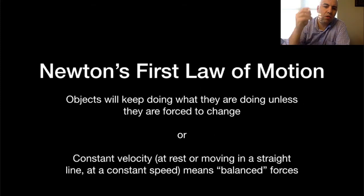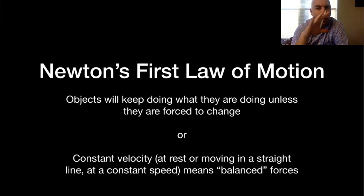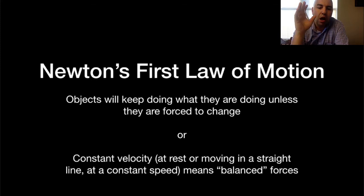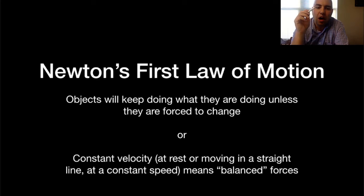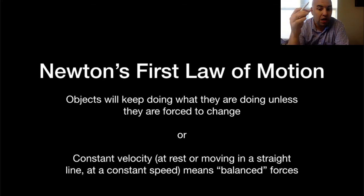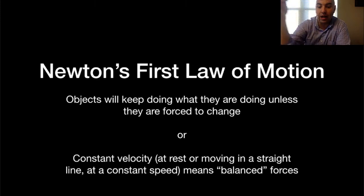We've talked about Newton's first law of motion, and that's the idea that objects are lazy — they're going to keep doing what they're doing unless they're forced to. Another, more technical way of looking at that is saying that objects are moving at a constant velocity. Something moving at a constant velocity could be at rest, or it could be moving in a straight line at a constant speed.